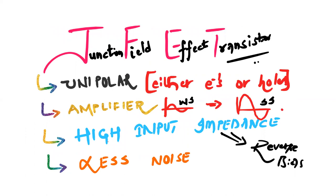FET is a Field Effect Transistor and it is a unipolar device — the entire operation is done either with electrons or holes, not both. If it uses both, that is called a Bipolar Junction Transistor (BJT). FET can be used as an amplifier, which is a device that converts a weak signal to a strong signal. FET has high input impedance because the gate junction is reverse biased, which is an advantage compared to BJT.